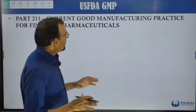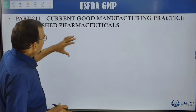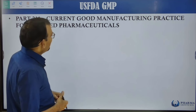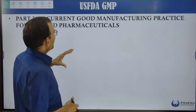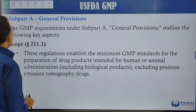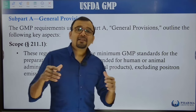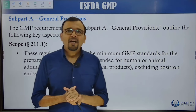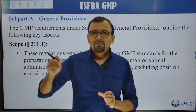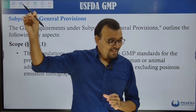According to Part 211, if you want to manufacture, market, or sell a product in the US, you need to understand what Good Manufacturing Practices need to be followed to manufacture the pharmaceutical product. There are different subparts within Part 211.